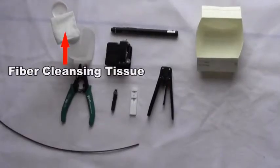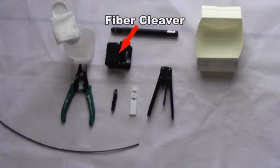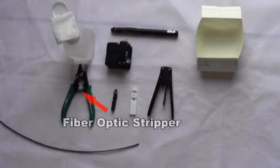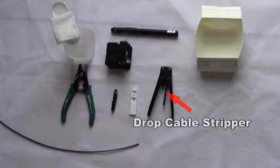Fiber Cleansing Tissue. Tools needed: Alcohol Bottle, Fiber Cleaver, Light Source, Fiber Optic Stripper, Fiber Holder, and Drop Cable Stripper.